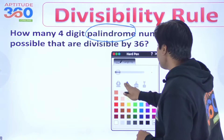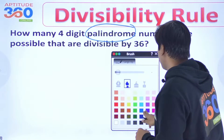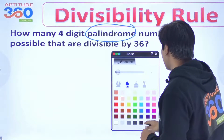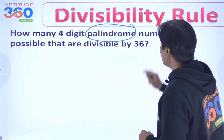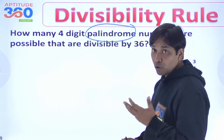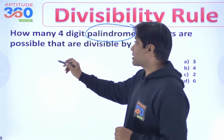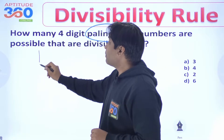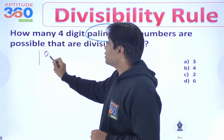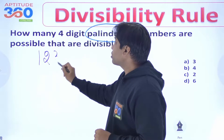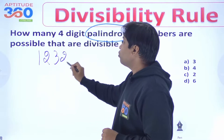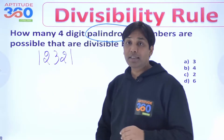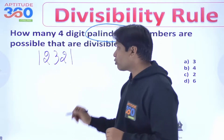Palindrome kis ko bolte hai? Ek wo number joh jaisa aage se ho, waisa hi piche se ho — us ko bolte hain palindrome. For example, if we have 1, 2, 3, 2, 1 — can I say this is a palindrome? Yes.